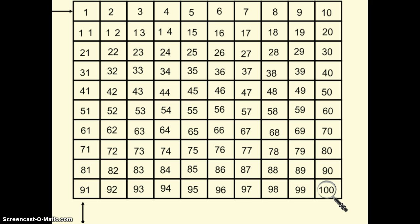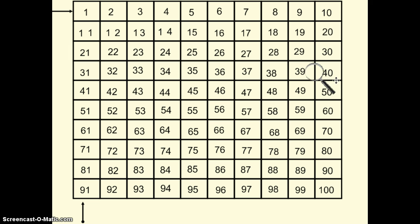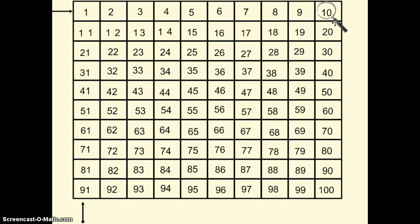We can also use our hundreds chart to count by fives — five, ten, fifteen, twenty, twenty-five, thirty, thirty-five, forty, and so on. If you notice, the fives are always in the same column in the ones place on our hundreds chart, and the tens are always in the same column on our hundreds chart.